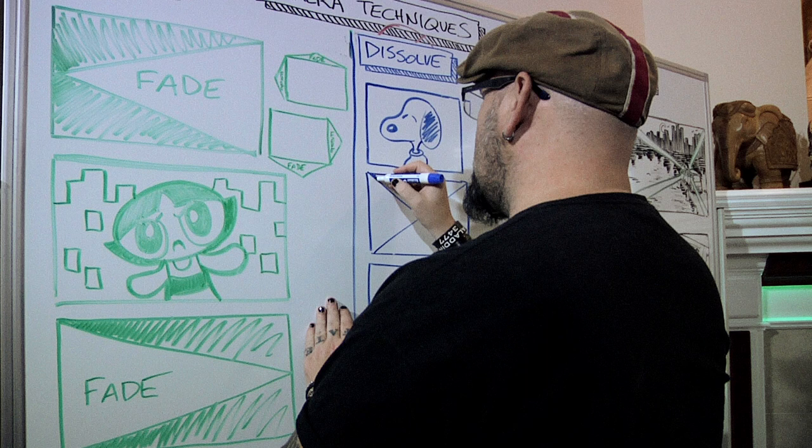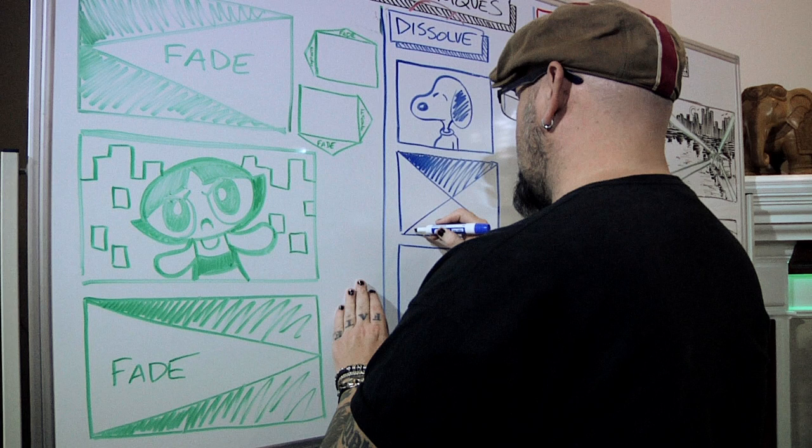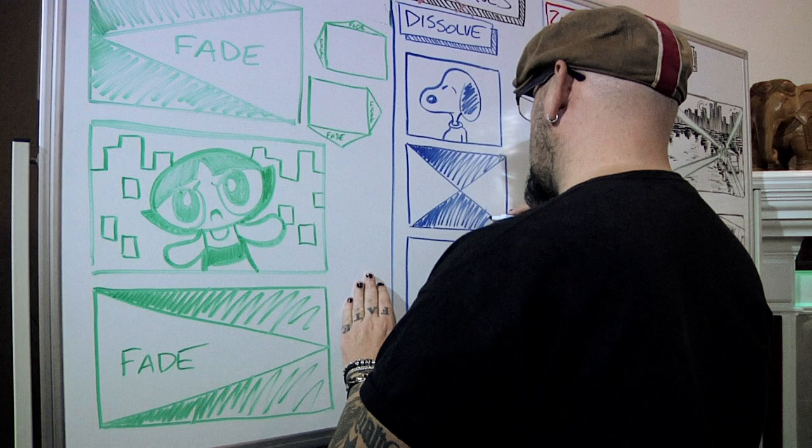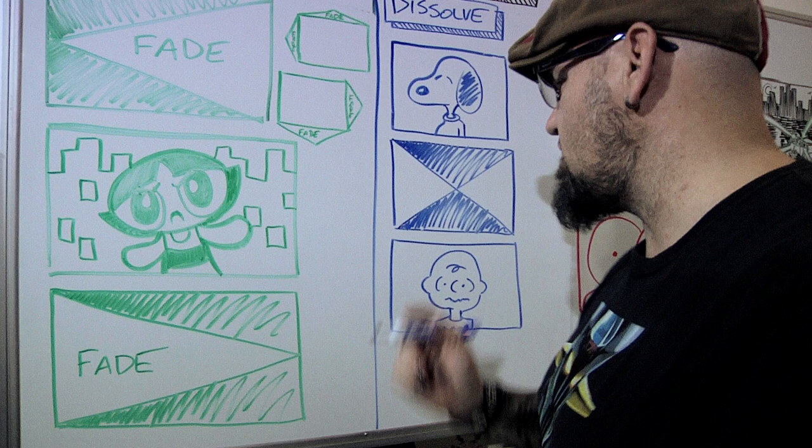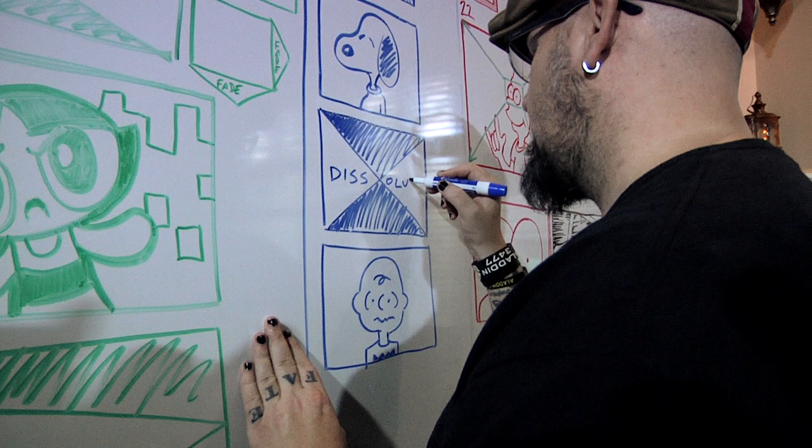These markers are just kind of scribbly and it's hard to get a nice even tone, so this looks very unprofessional. You would want to use rulers and Sharpies to really get these in nice and dark. Then very simply, you write the word dissolve. And this is kind of the international symbol for what dissolve is.